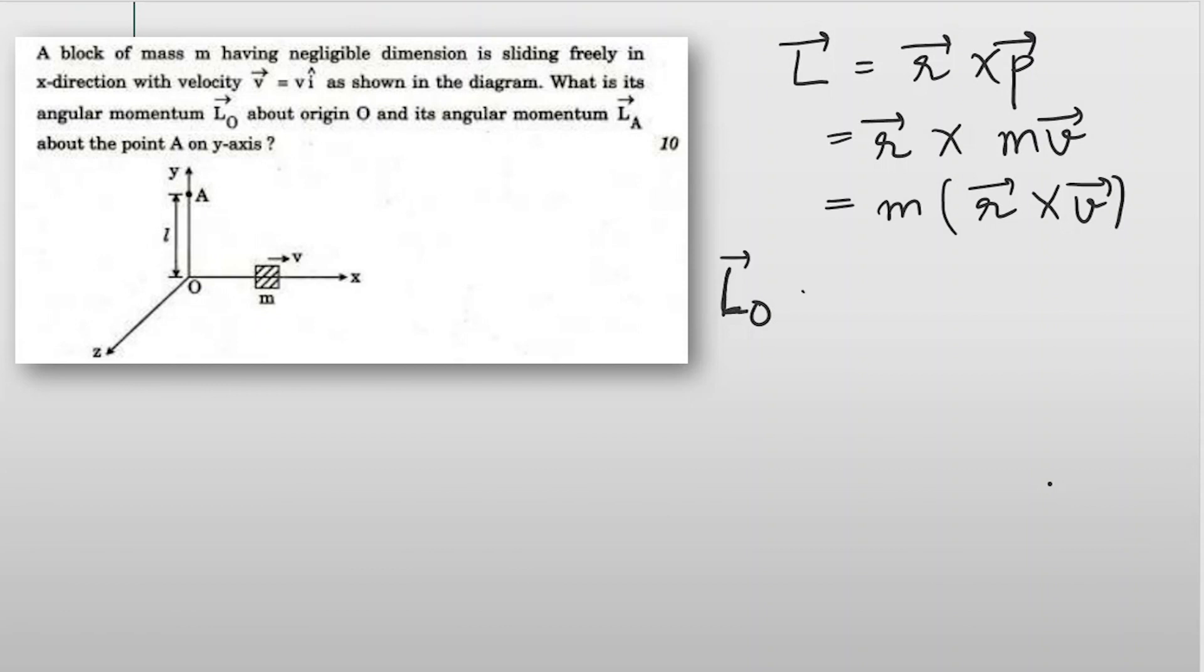We first have to find out the velocity r_o. The velocity is v i cap in this x direction, so this is our velocity given. The position vector will be x i cap, since x varies with time.